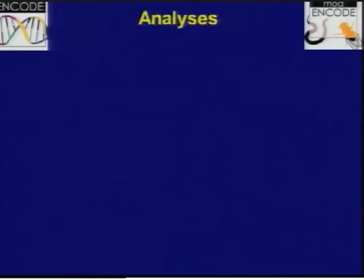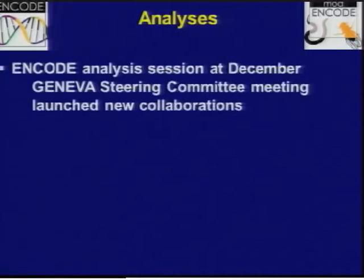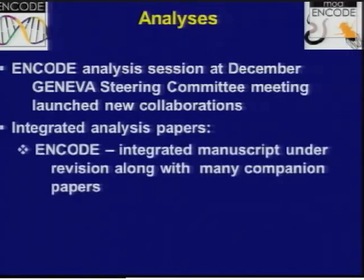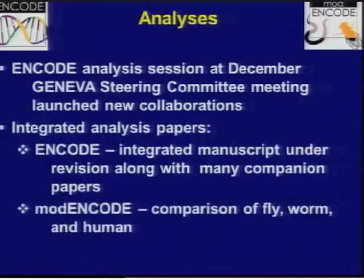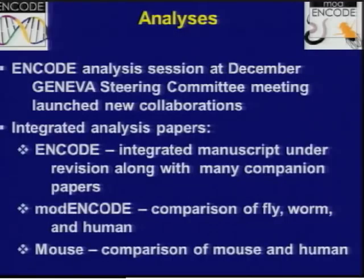At the December GENEVA Steering Committee meeting, there was a joint session with ENCODE and GENEVA investigators. ENCODE investigators analyzed eight GENEVA GARNET GWAS data sets and were paired with GENEVA/GARNET investigators for hands-on demonstrations of how to use ENCODE data to follow up GWAS studies, resulting in new collaborations and plans for publications and grant applications. The ENCODE consortium has a major integrative paper under revision at a journal mentioned earlier, along with many companion papers, all aimed for publication in 2012. The modENCODE consortium is working on a paper integrating worm, fly, human modENCODE, and ENCODE data, and the mouse ENCODE consortium is planning a comparison of human and mouse ENCODE data.